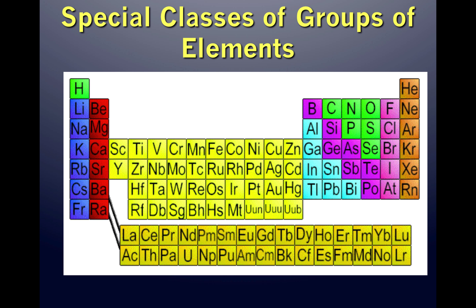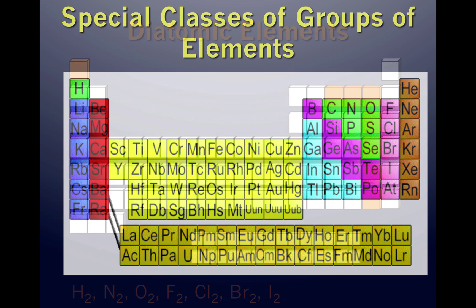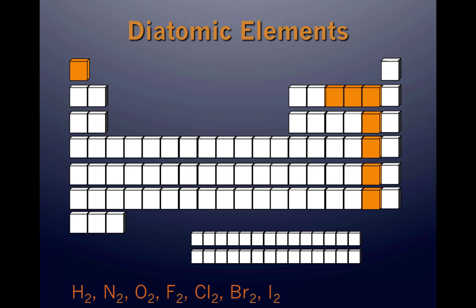Let's continue our discussion of the periodic table by looking at some special classes of groups of elements. First of all, let's consider the diatomic elements.